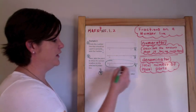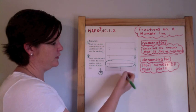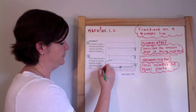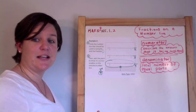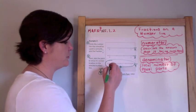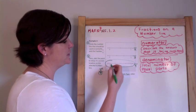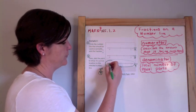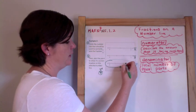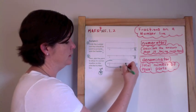If this is 3 fourths, I'm looking at my numerator now, which is 3. And that describes the amount that is being considered. So I'm considering the 3 starting at 0. I'm going to count 3 spaces and that's where my point is going to go. 1, 2, 3. And that would be 3 fourths.